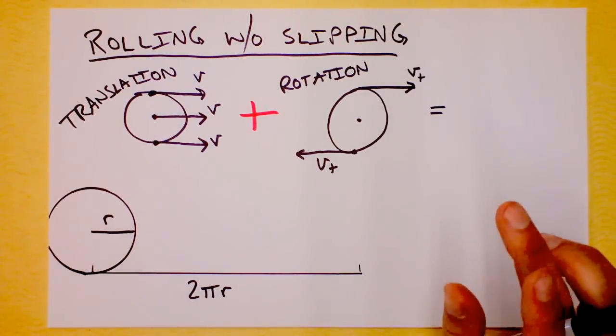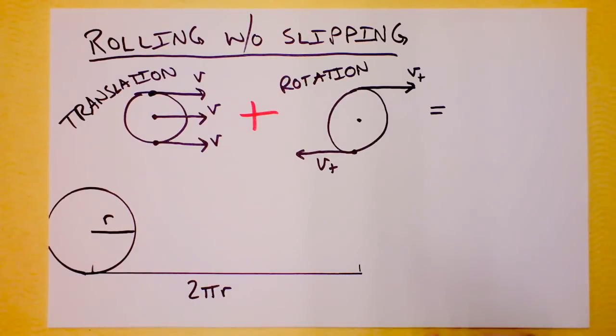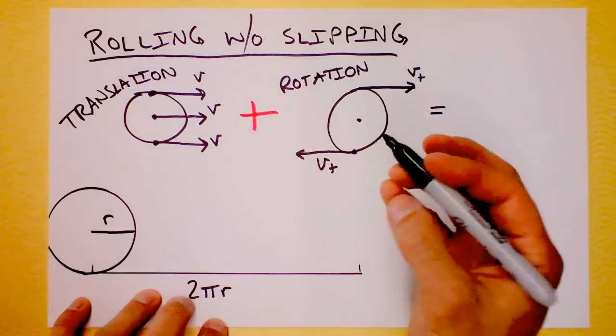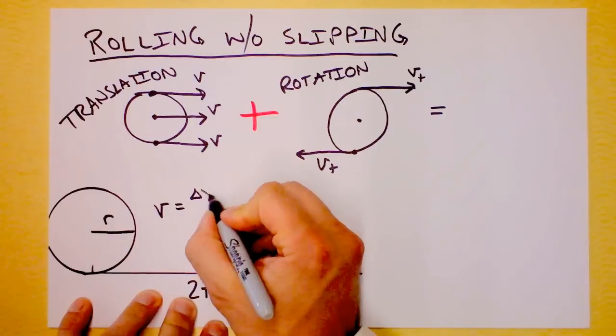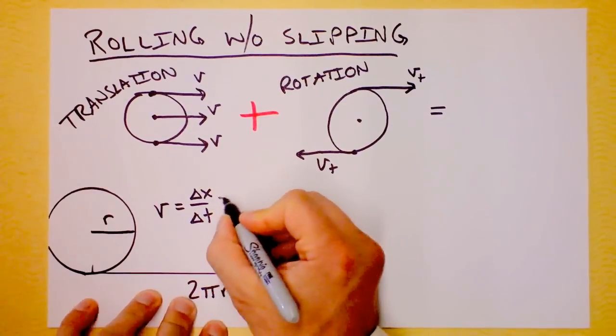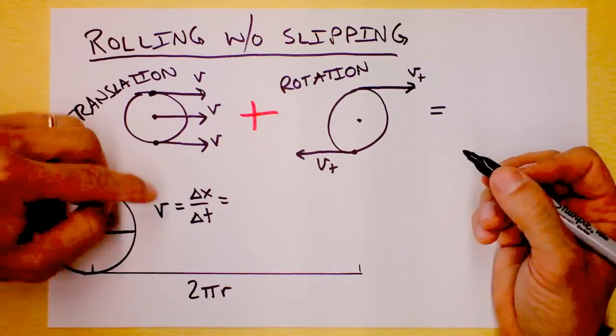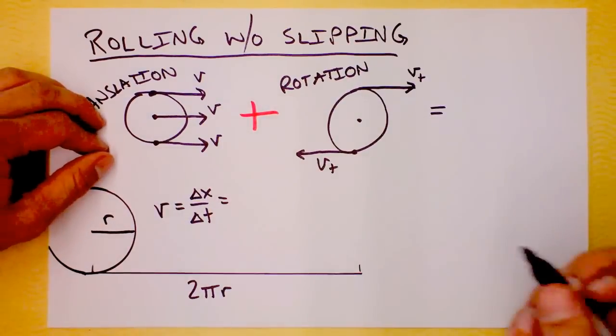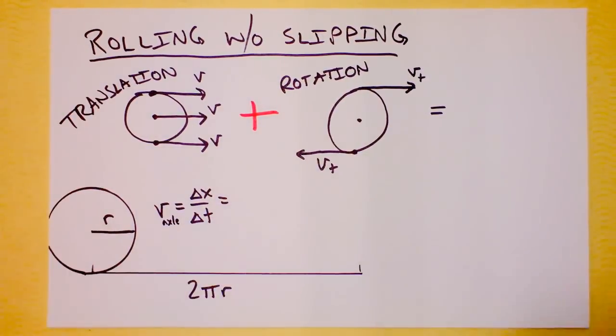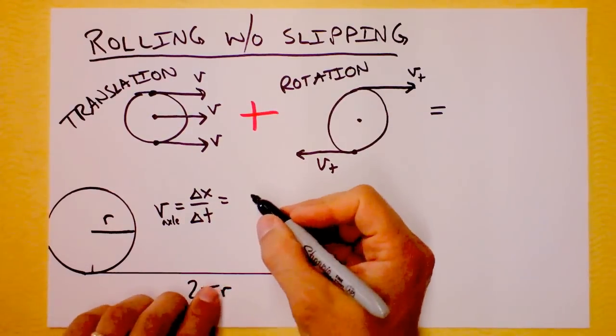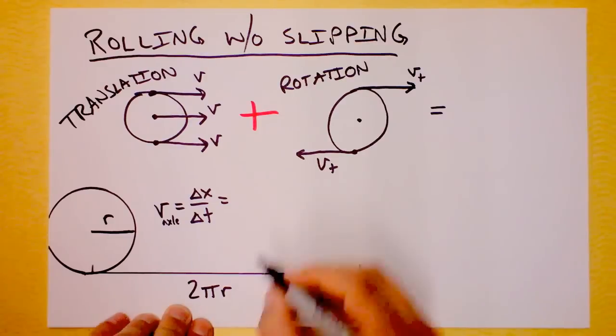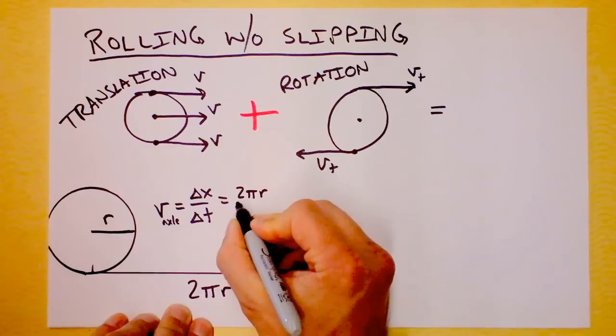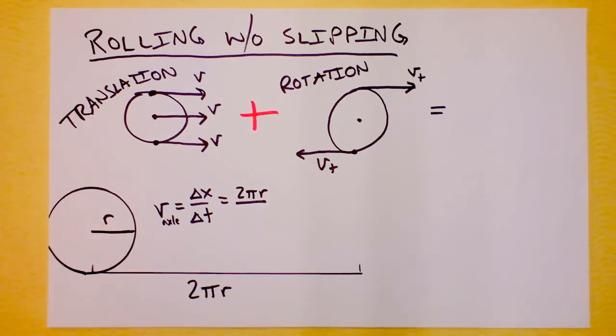So if we wanted to calculate its speed, now this would be an interesting challenge. We could figure out how fast it's going by saying its velocity is equal to displacement over time. So let's get ourselves some numbers here. The speed of the axle, I'm actually going to label this as axle speed. The speed of the axle is equal to how far it's gone, which is 2πr, divided by how long it took.